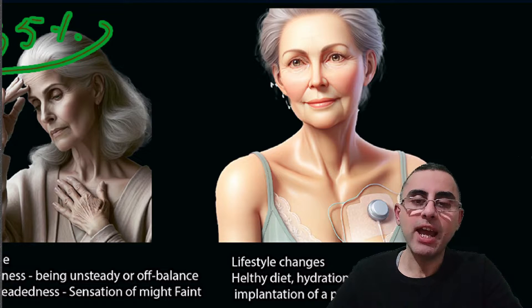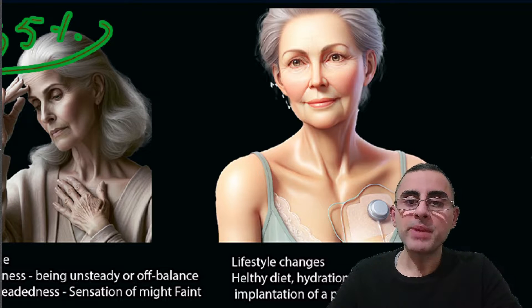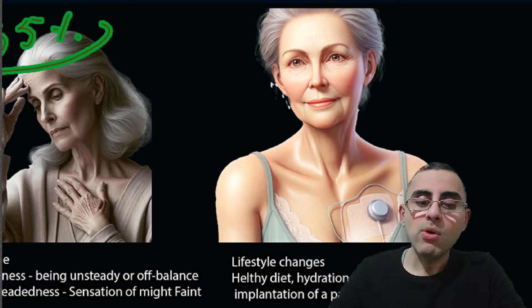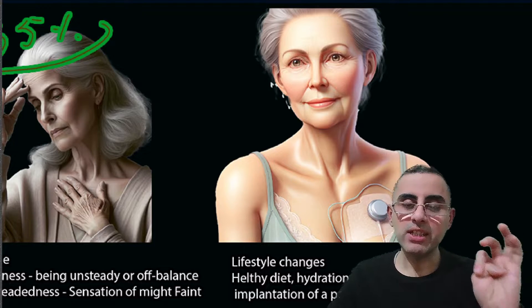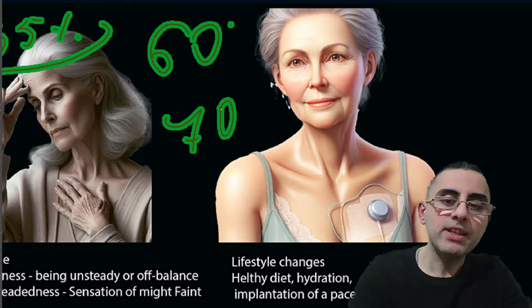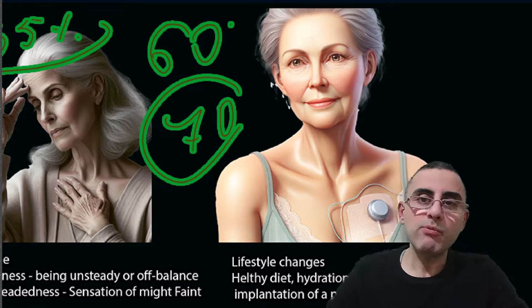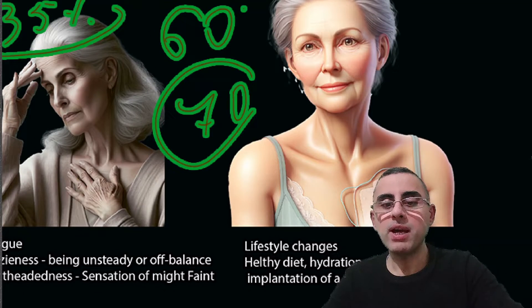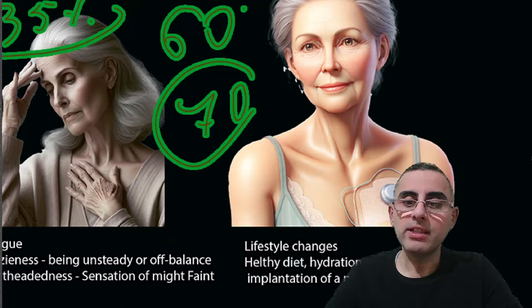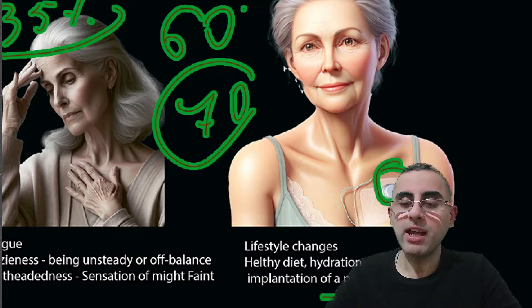Lifestyle factors are very important during aging: how healthy the diet is, whether the person avoids smoking, how physically active they are, and their hydration. Medications also matter. Genetics is important too, and bradycardia from aging usually occurs after age 60, or for some people after 70. If bradycardia is very prominent and not managed by lifestyle changes such as physical activity, healthy diet, and hydration, then implantation of a pacemaker is the solution.